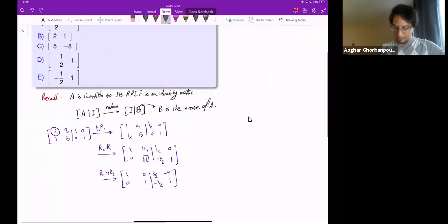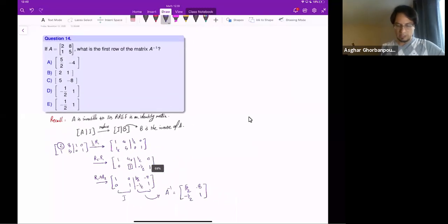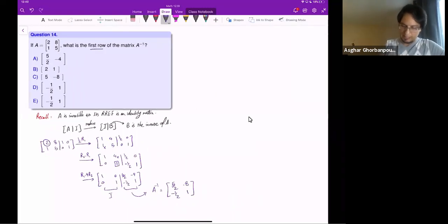So this is identity. This will be the inverse, so A inverse is equal to [5/2 -8; -1/2 1]. What are we interested in? The first row. So I picked the first row of this.